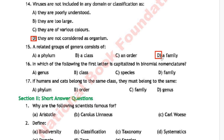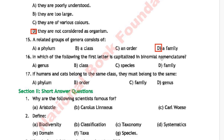Question 13: In which of the following is the first letter capitalized in binomial nomenclature? Option A is genus, option B is class, option C is species, and option D is family. The correct answer is option A, genus.